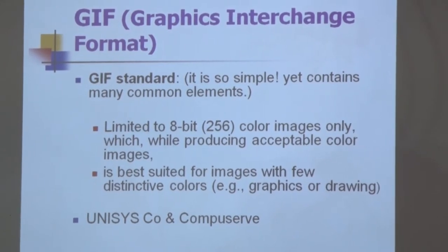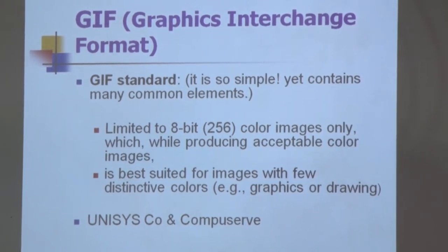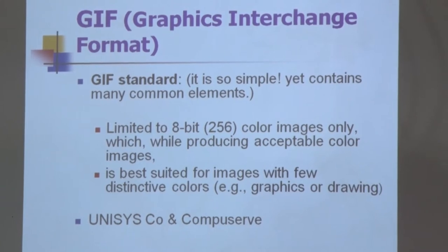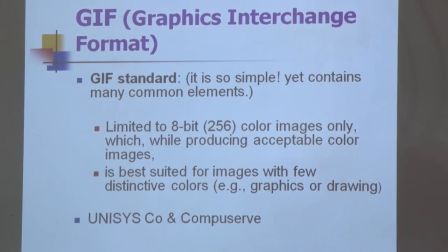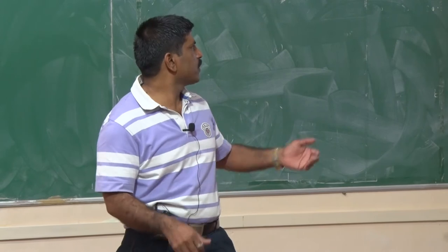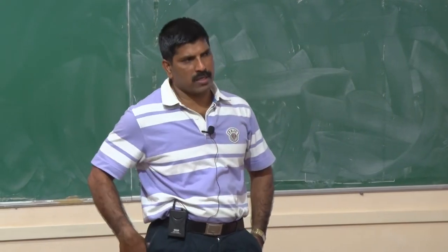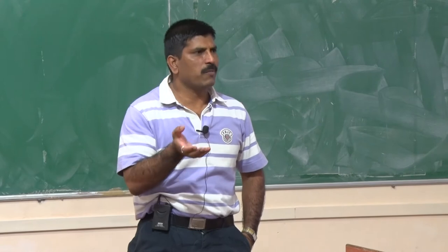The first characteristic of GIF is that it is limited to 8-bit, meaning there are only 256 color shades. The GIF standard is simple and contains many common elements. It is limited to 8-bit color images, while still producing acceptable color images.